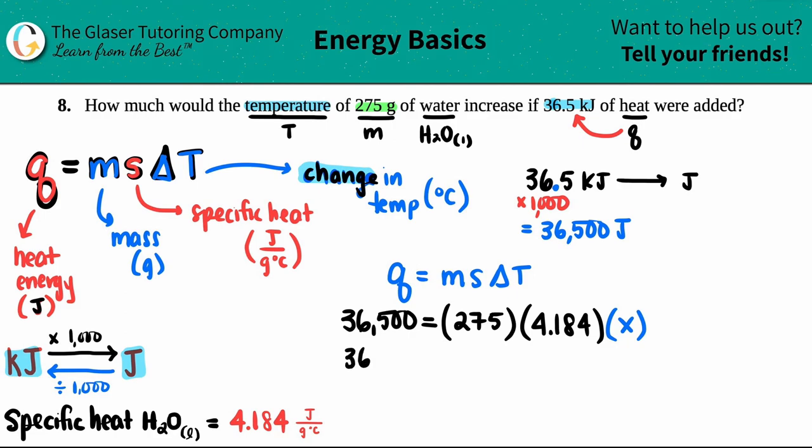So let's do the algebra. 36,500 equals, I'll multiply those three numbers, 275 times 4.184. I get 1,150.6. And that's now being multiplied by X. If I want to solve for X, I will divide by 1,150.6 on both sides. And I'll get my answer. This will cancel. And now I'm left with X, which was my delta T. So that's my change in temp. 36,500 divided by the 1,150.6.